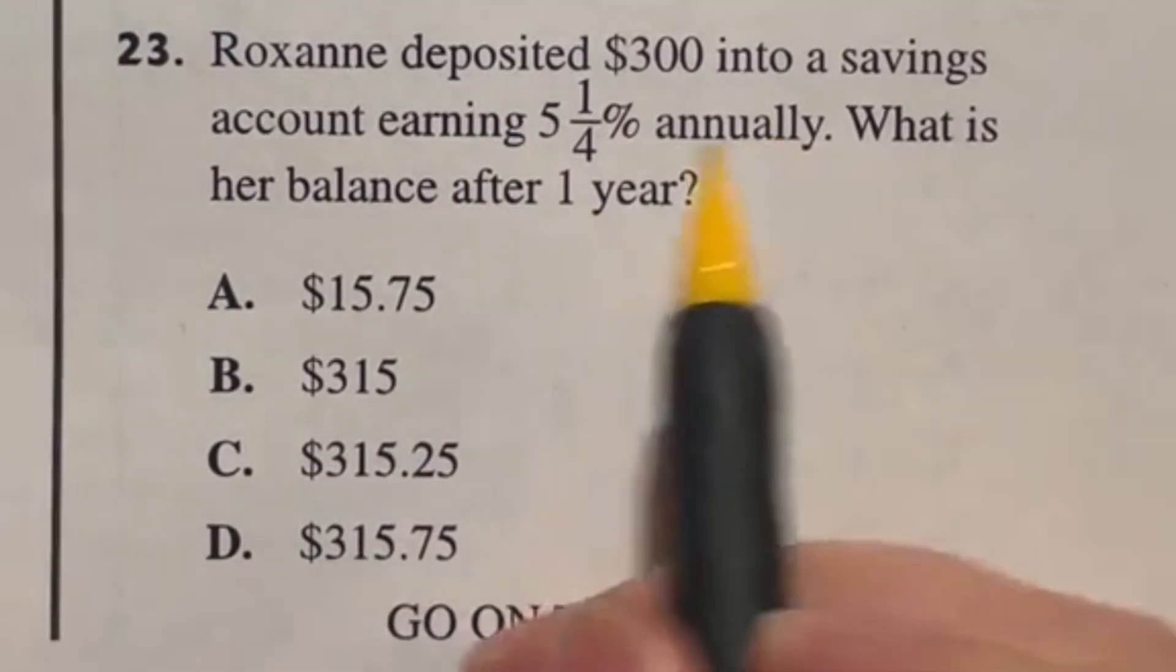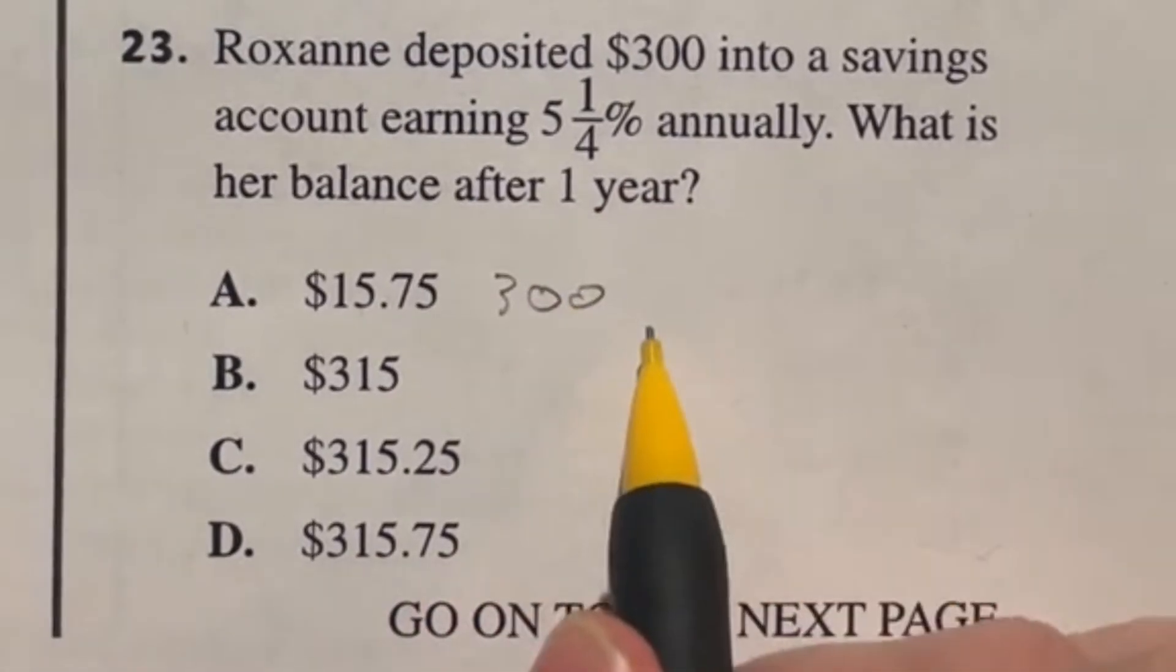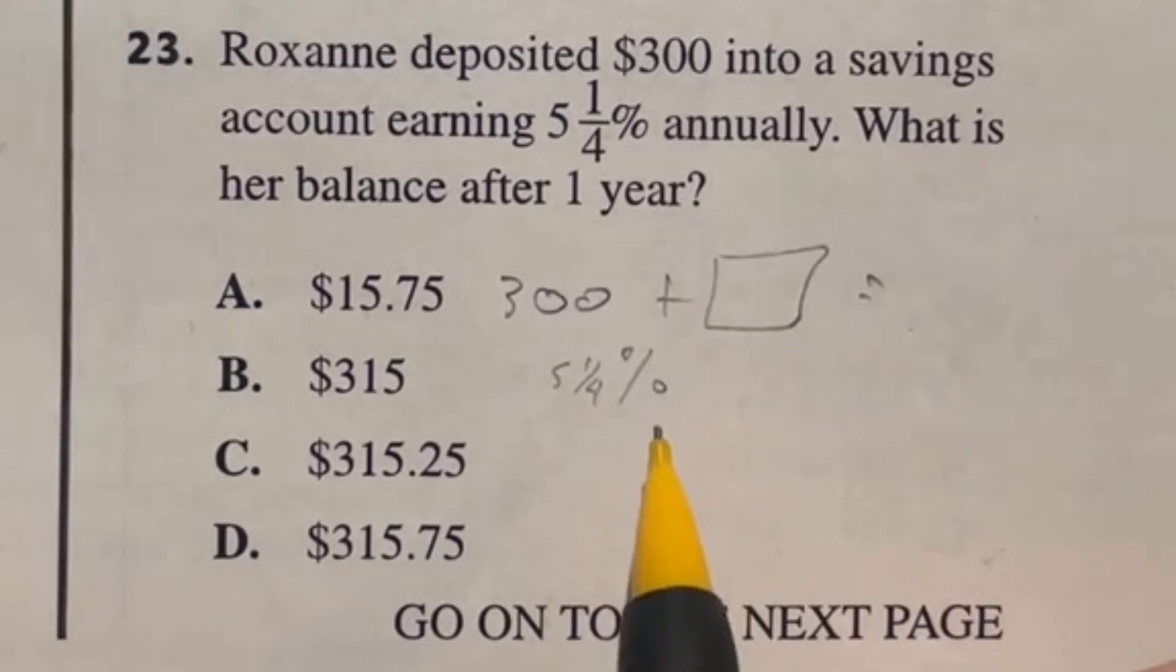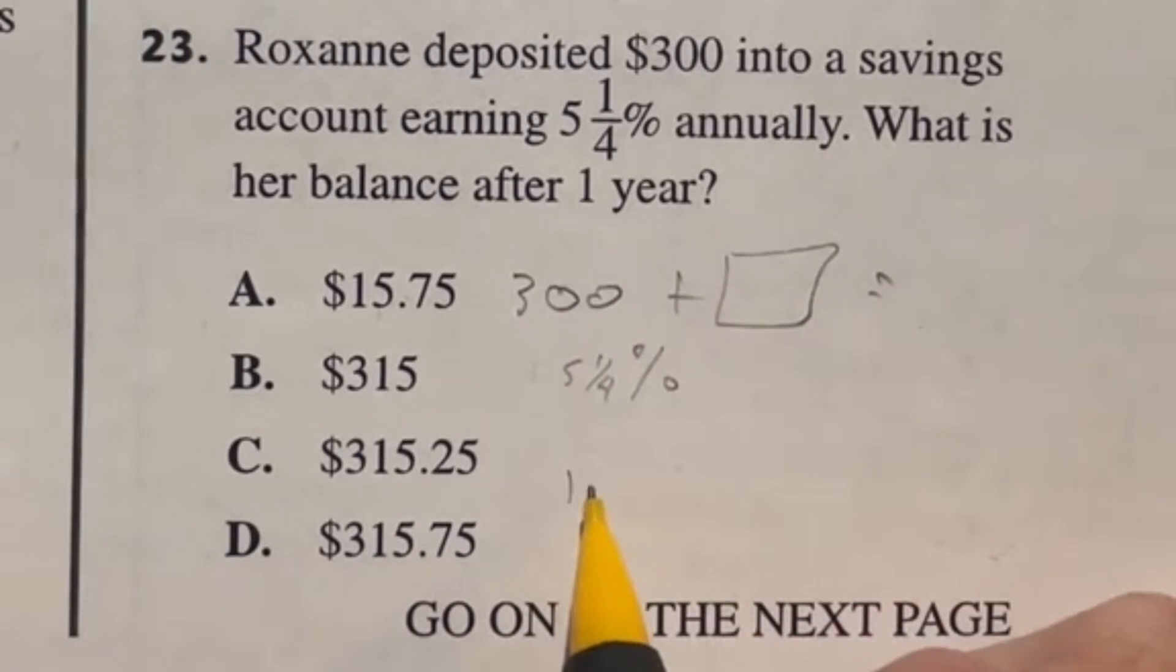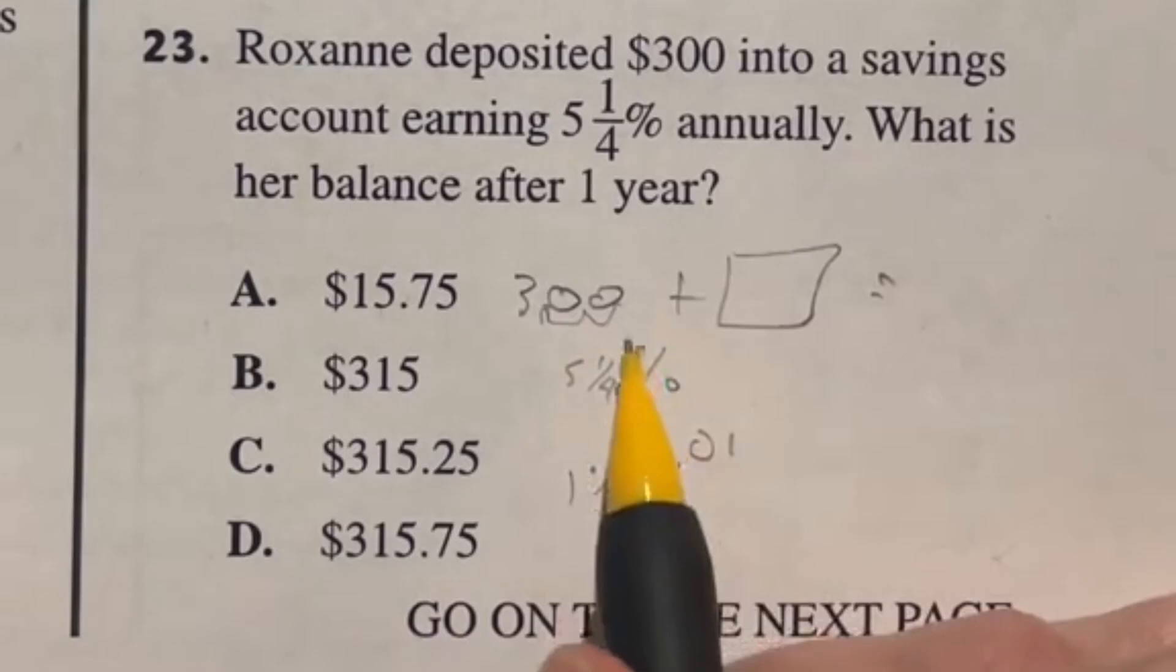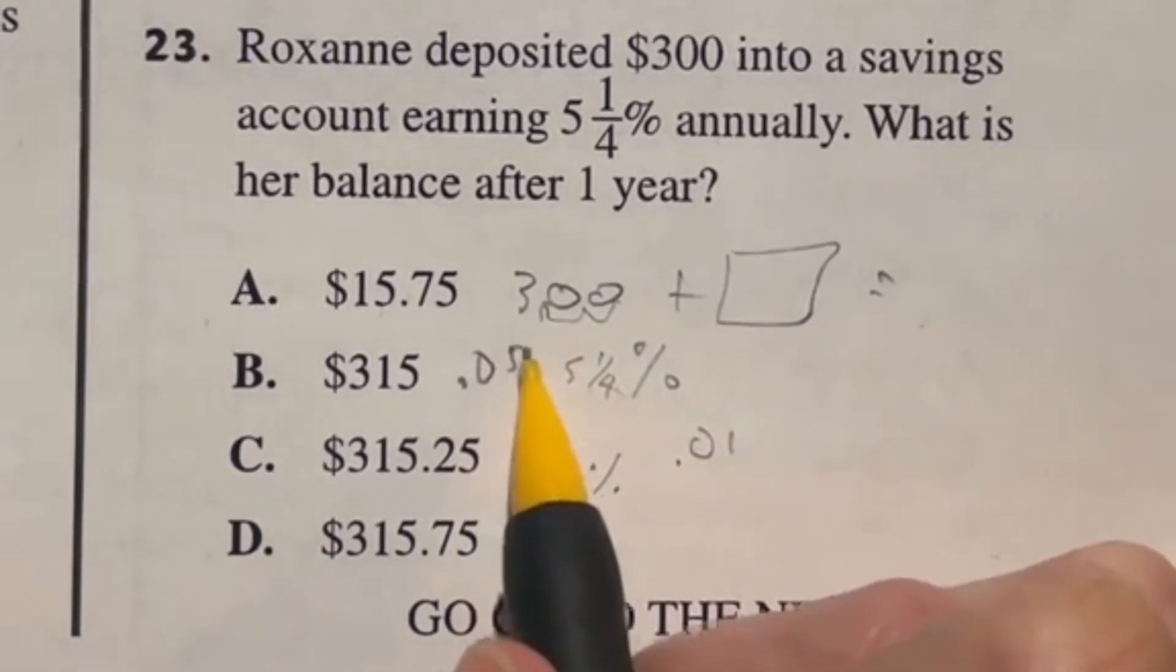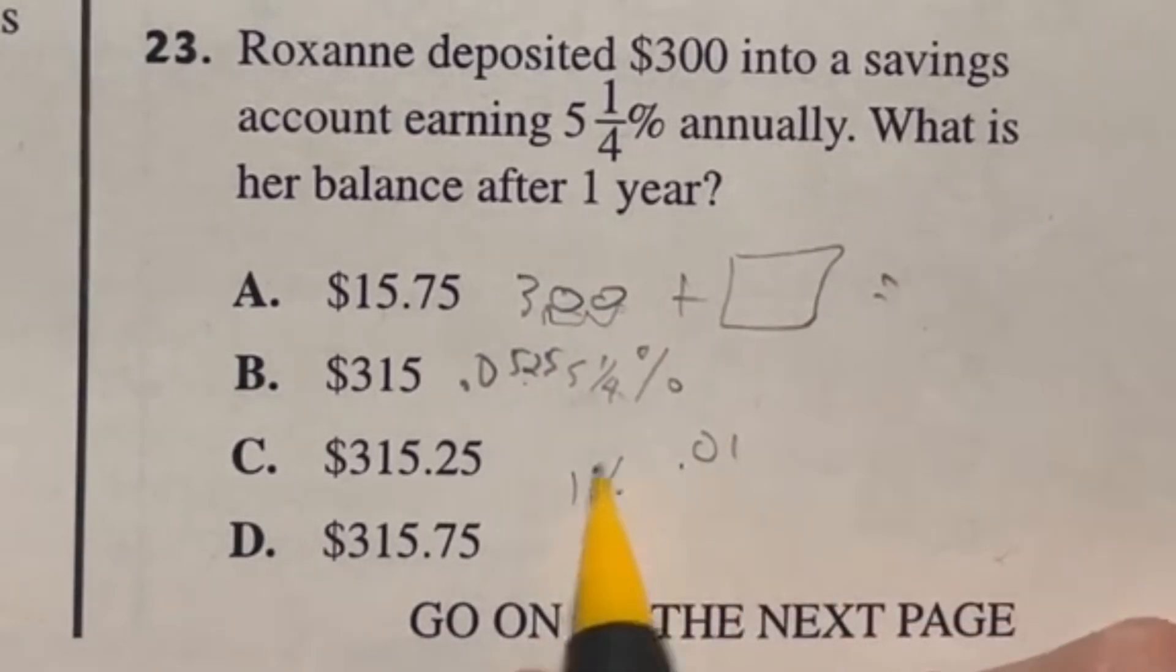Problem 23: Roxanne deposited $300 into a savings account earning five and a fourth percent annually. What is her balance after one year? We're taking this $300 and we're adding whatever five and a fourth percent of that guy is to it, and then finding out how much that is going to be for the new total. So how do we find five and a fourth percent of 300? One percent would just be moving the decimal over twice. We could say one fourth is 0.25, so we would say move the decimal place over twice, this would be 0.0525. We can multiply this by the full 300 without a calculator. I'm going to instead do it doing this way.